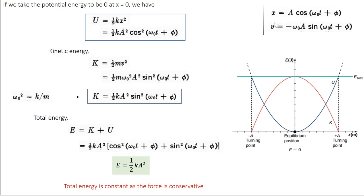From the previous class, we know x = A cos(ω₀t + φ). Graphically, U(x) = ½kx² is a quadratic function corresponding to a parabola, shown as the blue curve. At the equilibrium position, you have the minimum potential energy — that's why the force is also zero there. At the turning points, it has the maximum potential energy.